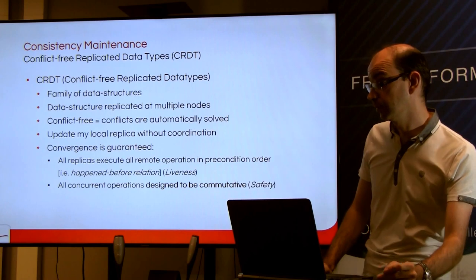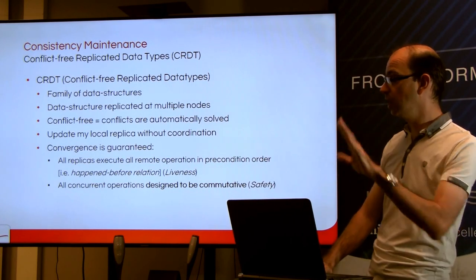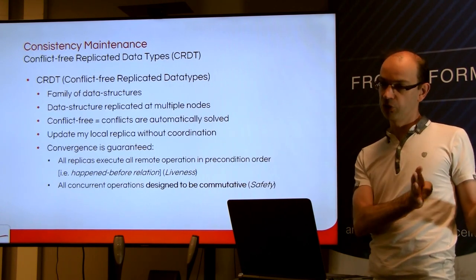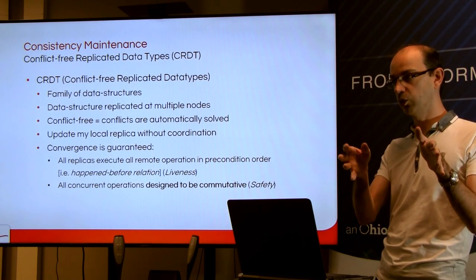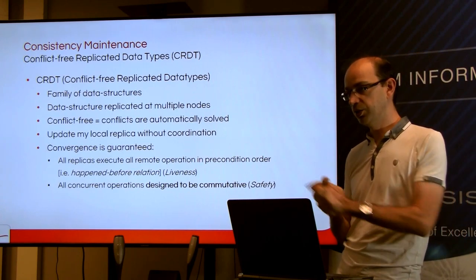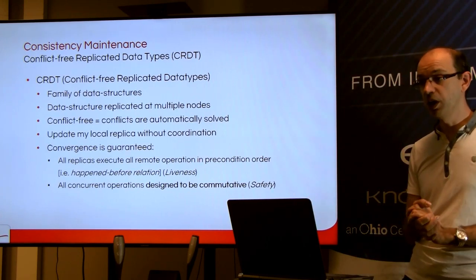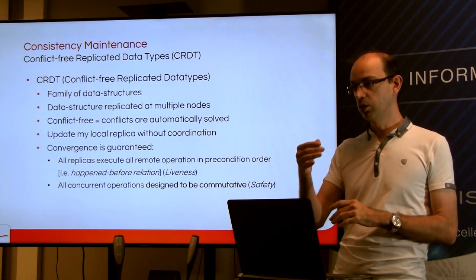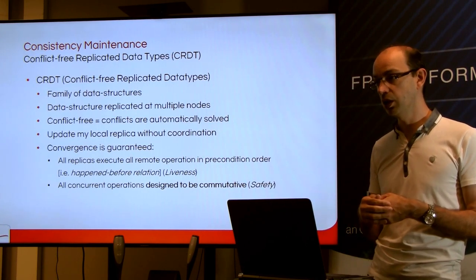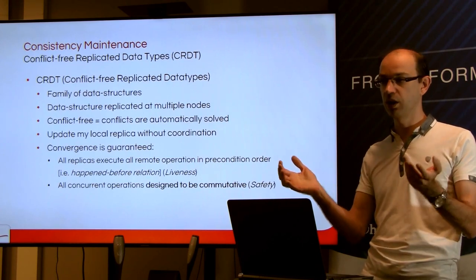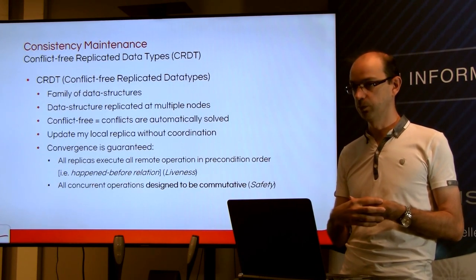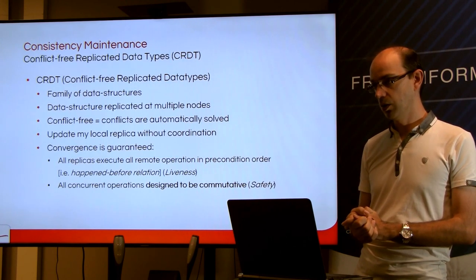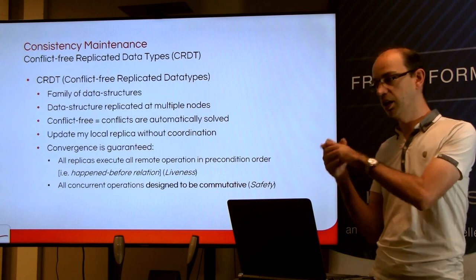An audience member asks why concurrent operations need to be commutative. The answer: since concurrent operations will be applied in different orders on different copies, making them commutative guarantees the same result everywhere. The first approach (OT) uses non-commutative operations plus transformation functions; the CRDT approach instead designs the operations and data structures so that commutativity holds inherently. The speaker acknowledges this seems restrictive at first, but demonstrates that most common data structures can be expressed this way, and they can be combined to model complex things.